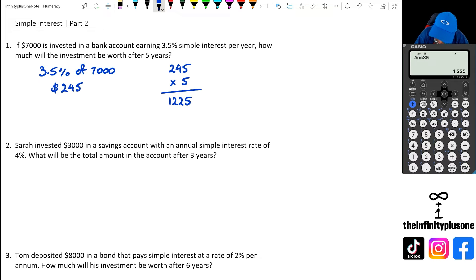So the investment after five years is going to be 7,000 plus 1,225, which equals $8,225. It's a fairly decent bit of interest there. Of course, you got to pay tax, but that's a different story.